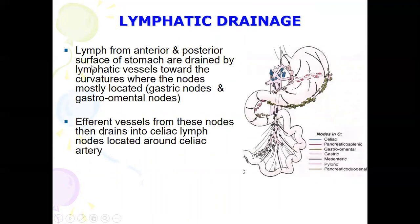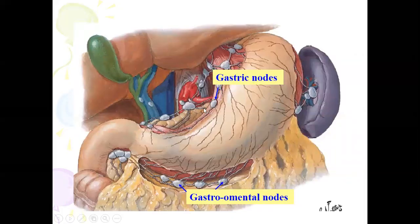For the lymphatic drainage, the lymph from the anterior and posterior surfaces of the stomach drains via lymphatic vessels toward the curvature where the nodes are located. The gastric nodes drain the lesser curvature, and the gastro-omental nodes drain the greater curvature. These nodes ultimately drain into the celiac lymph nodes.